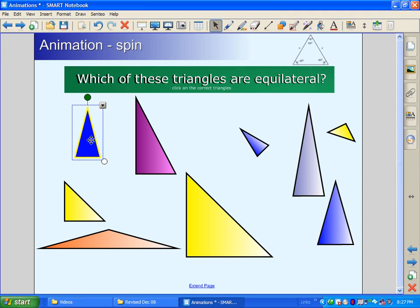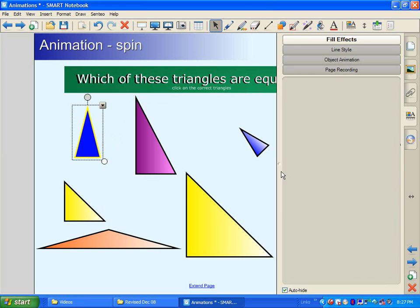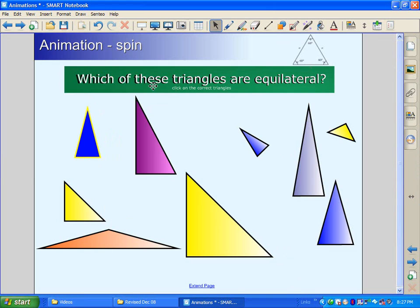If you ever need to remove an animation, you can simply click on the object, go down to the down arrow, go to Properties, go to Object Animation, and click Type None. And then you have removed the animation.